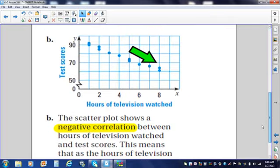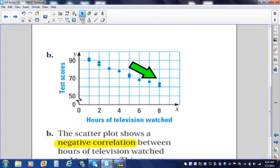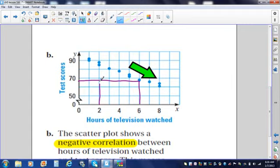Here's an example again. Do not write this example down. Just watch. Hours of television watched and test scores. The scatterplot shows a negative correlation between the hours of television watched and test scores. This means that as the hours of television watched increase, the test scores decrease. So, the peep who watched six hours of television scored lower than the peep who watched two hours of television. Again, negative correlation. All of the dots are going down and to the right.